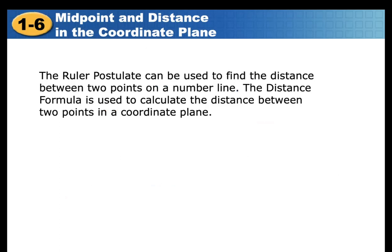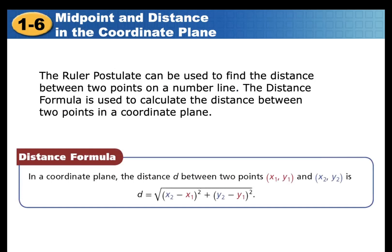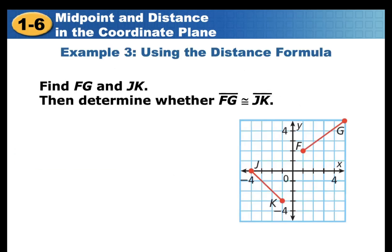We review the Ruler Postulate, which can be used to find the distance between two points on the number line. In the coordinate plane, the distance D between two points (X₁, Y₁) and (X₂, Y₂) equals the square root of (X₂ - X₁)² plus (Y₂ - Y₁)². Find the distances FG and GK, then determine whether the two line segments are congruent.